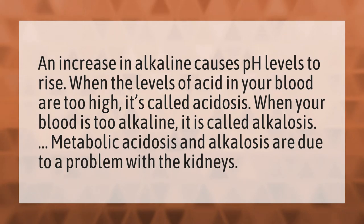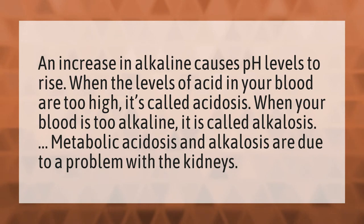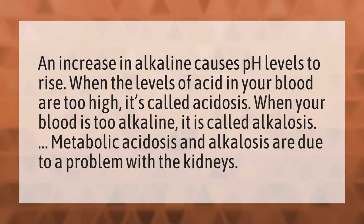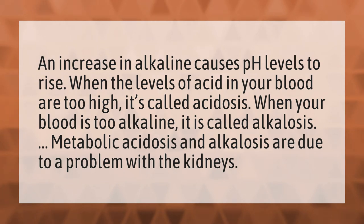An increase in alkaline causes pH levels to rise. When the levels of acid in your blood are too high, it's called acidosis. When your blood is too alkaline, it is called alkalosis. Metabolic acidosis and alkalosis are due to a problem with the kidneys.